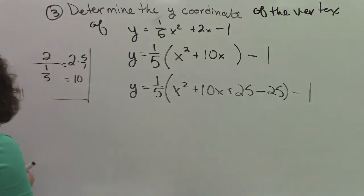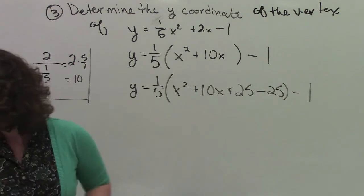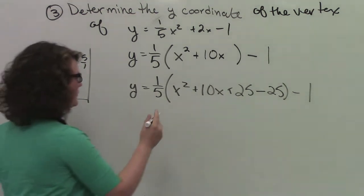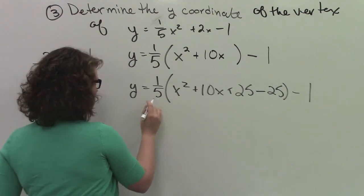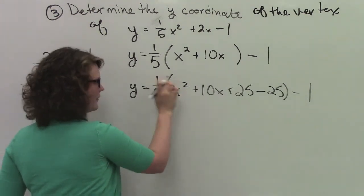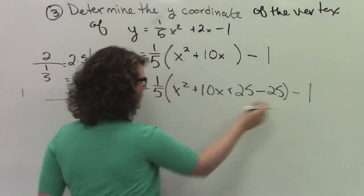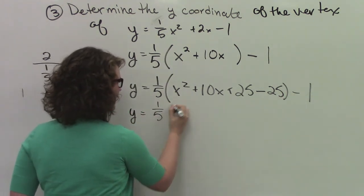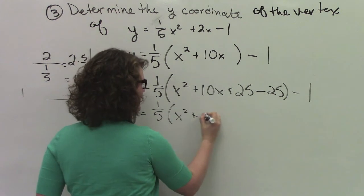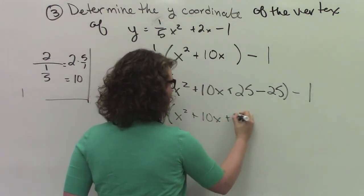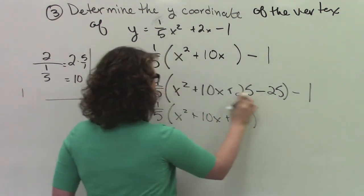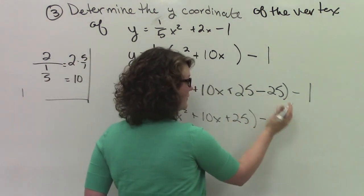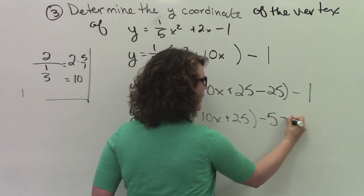Y equals 1 fifth x squared plus 10x plus 25 minus 25 minus 1. I'm just going to change markers here, because this one really stinks. So then what I'm going to do now is I'm going to go 1 fifth times negative 25.